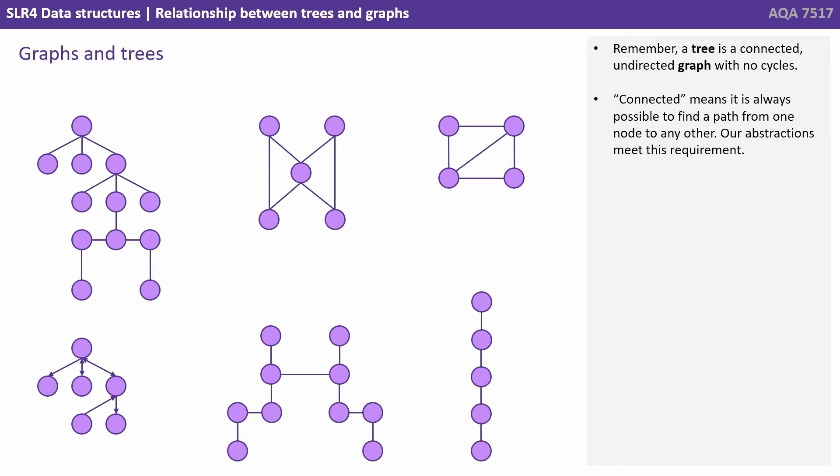Remember a tree is a connected, undirected graph with no cycles. Connected means it's always possible to find a path from one node to any other. Our abstractions all meet this requirement.